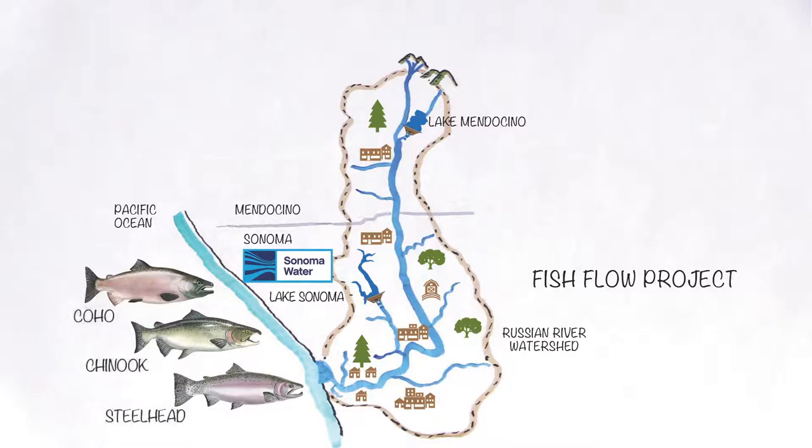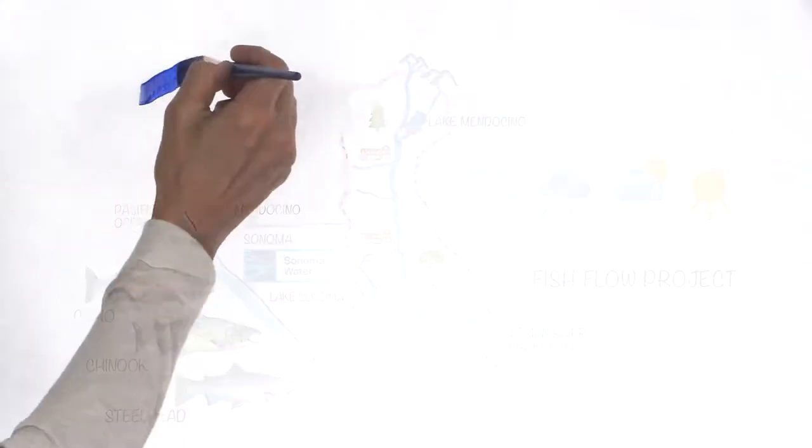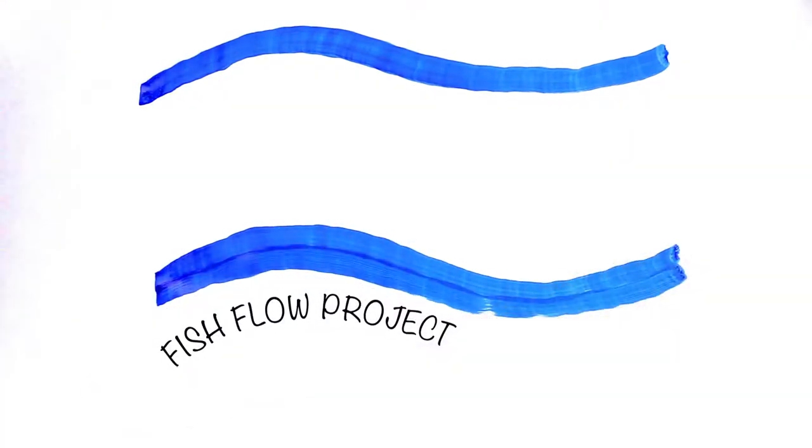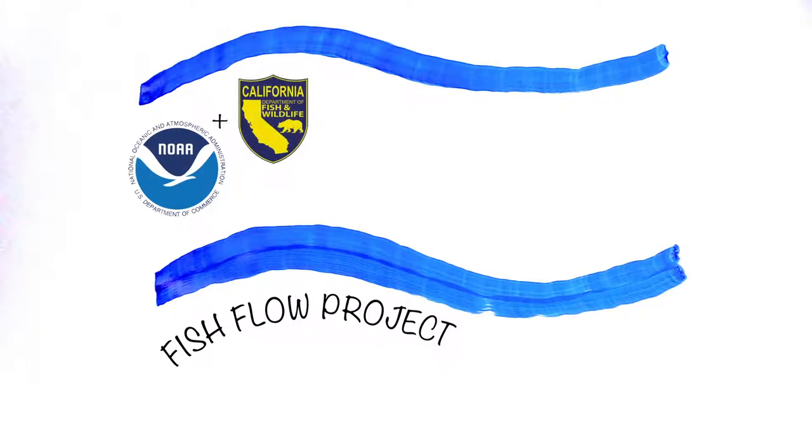The project aims to improve habitat for threatened and endangered salmon species and to improve water supply reliability for people and fish. The Fish Flow Project is a response to conclusions made by the National Marine Fisheries Service and the California Department of Fish and Wildlife.